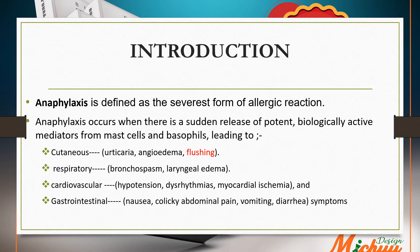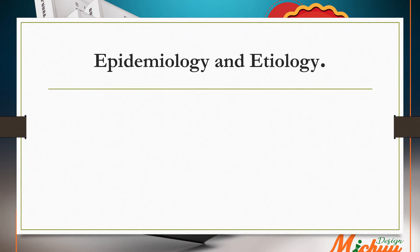Anaphylaxis occurs when there is a sudden release of potent biologically active mediators from mast cells and basophils, leading to cutaneous manifestations such as urticaria, angioedema, and flushing, and respiratory manifestations such as bronchospasm and laryngeal edema, and also cardiovascular manifestations such as hypotension, dysrhythmia, and myocardial ischemia.